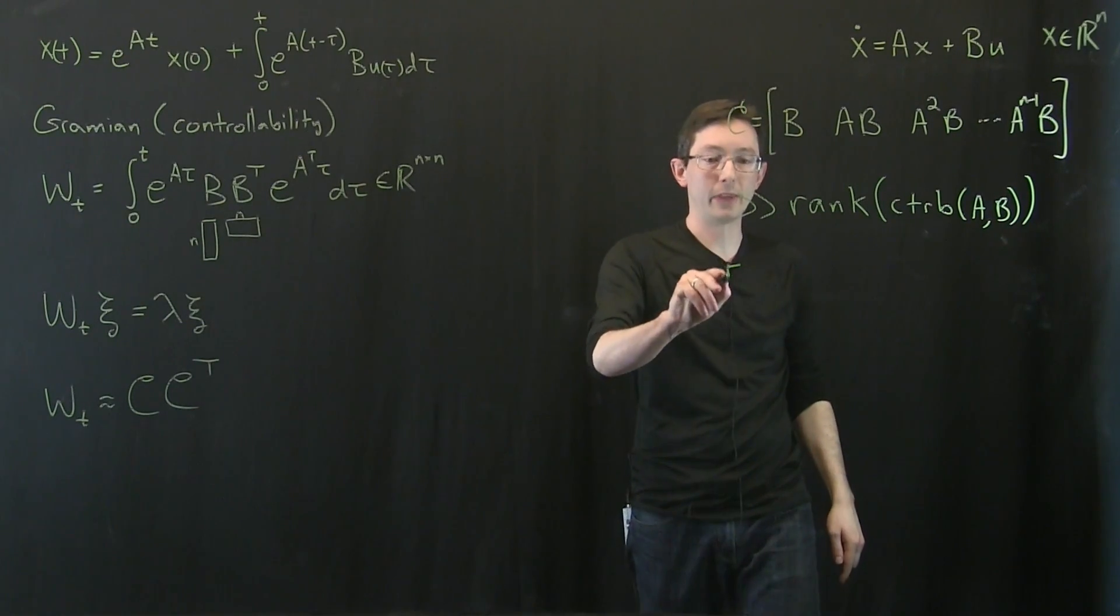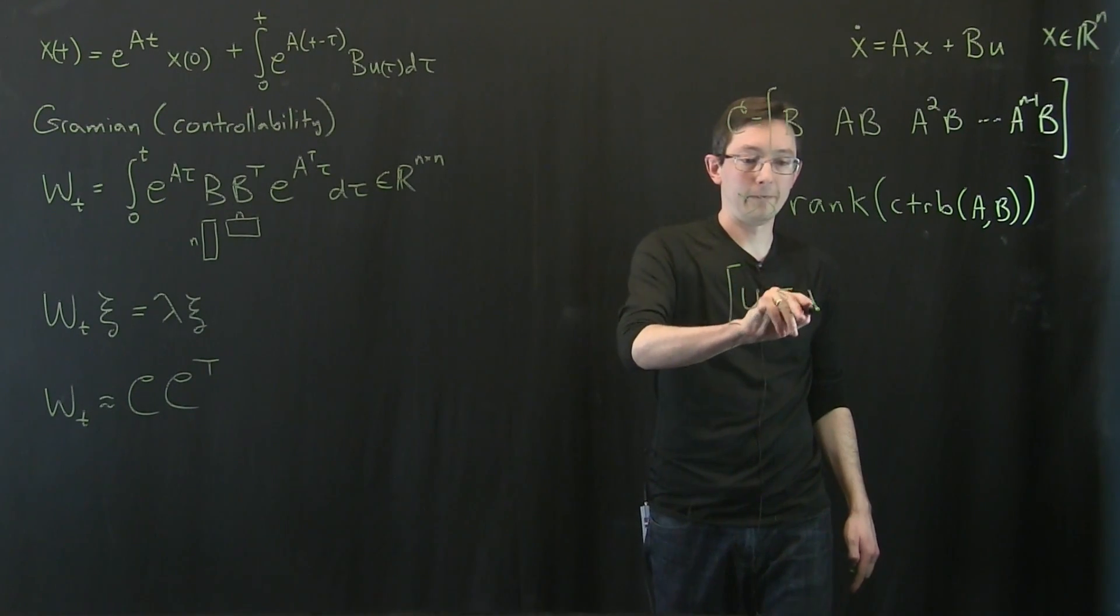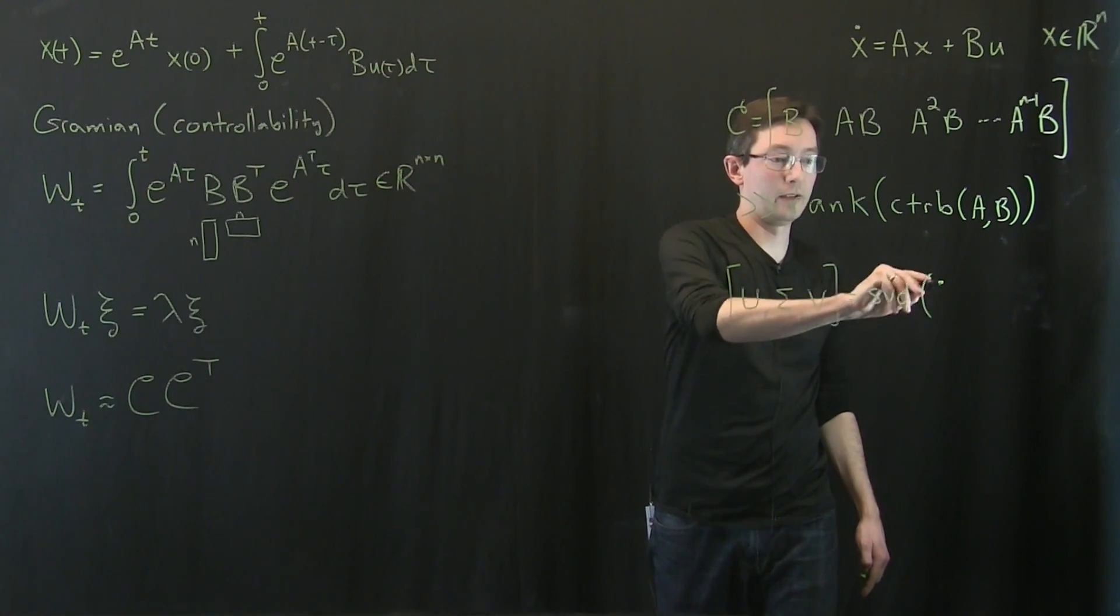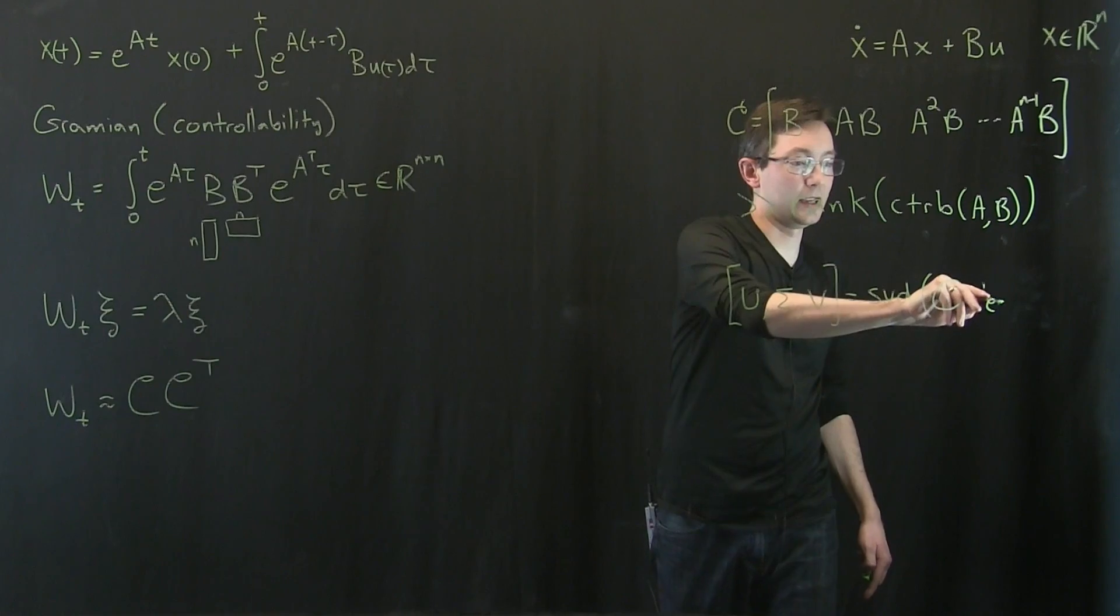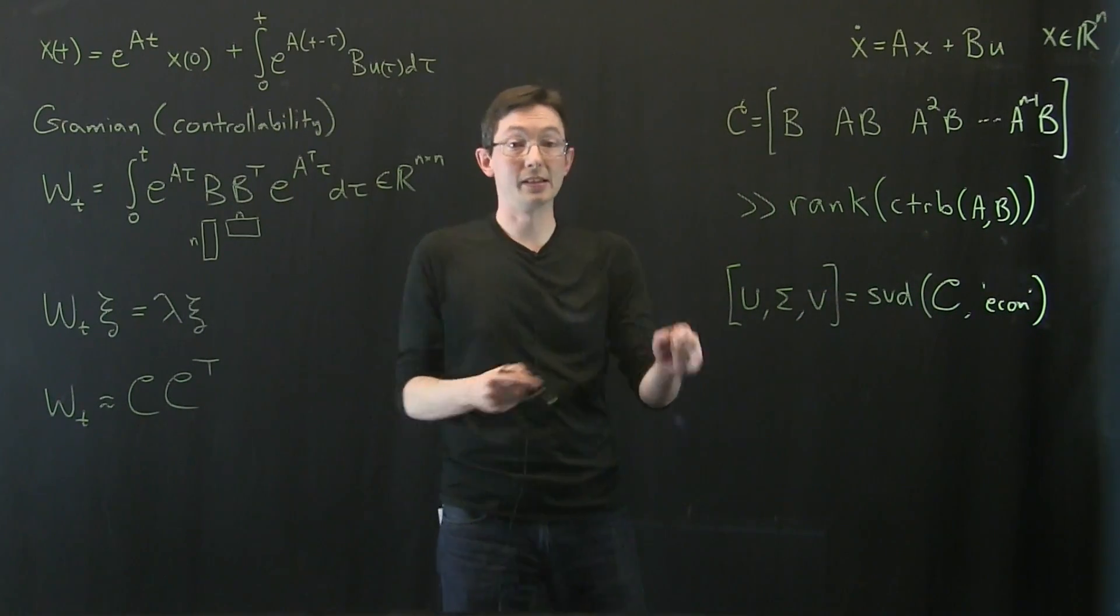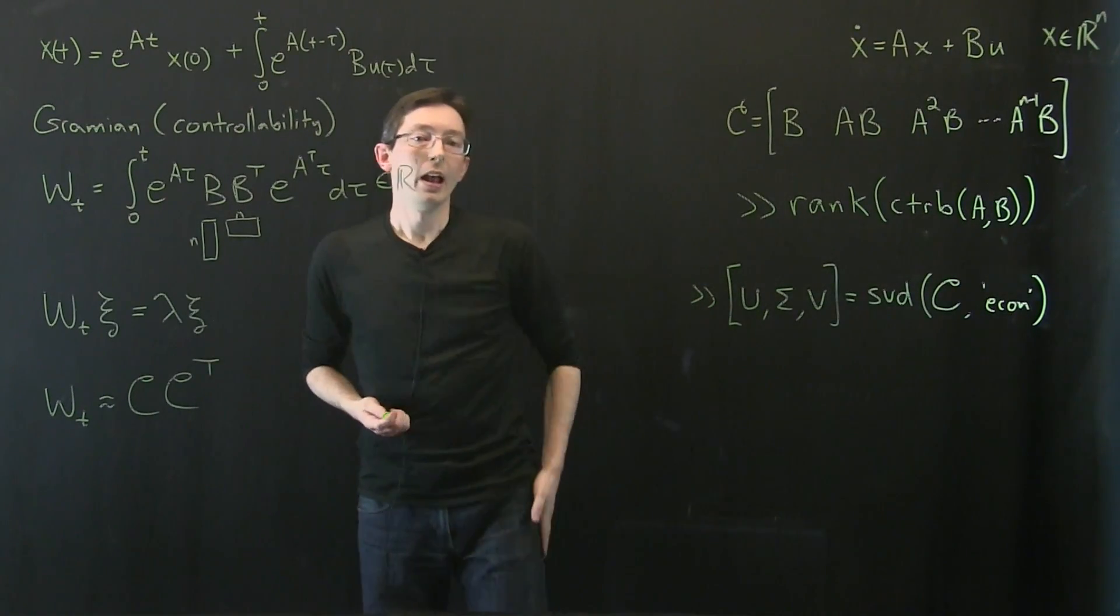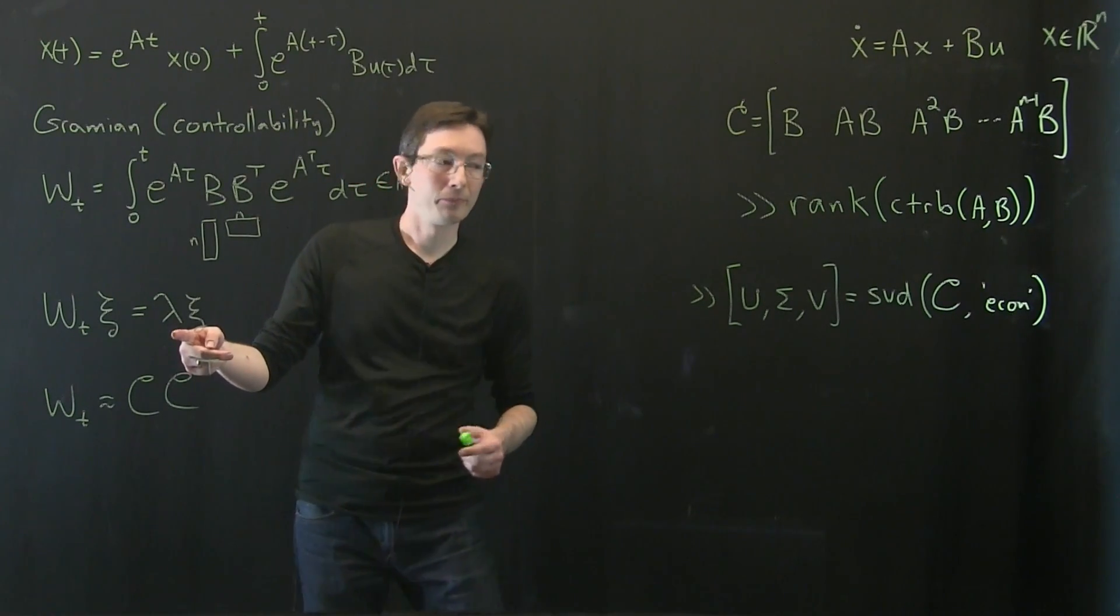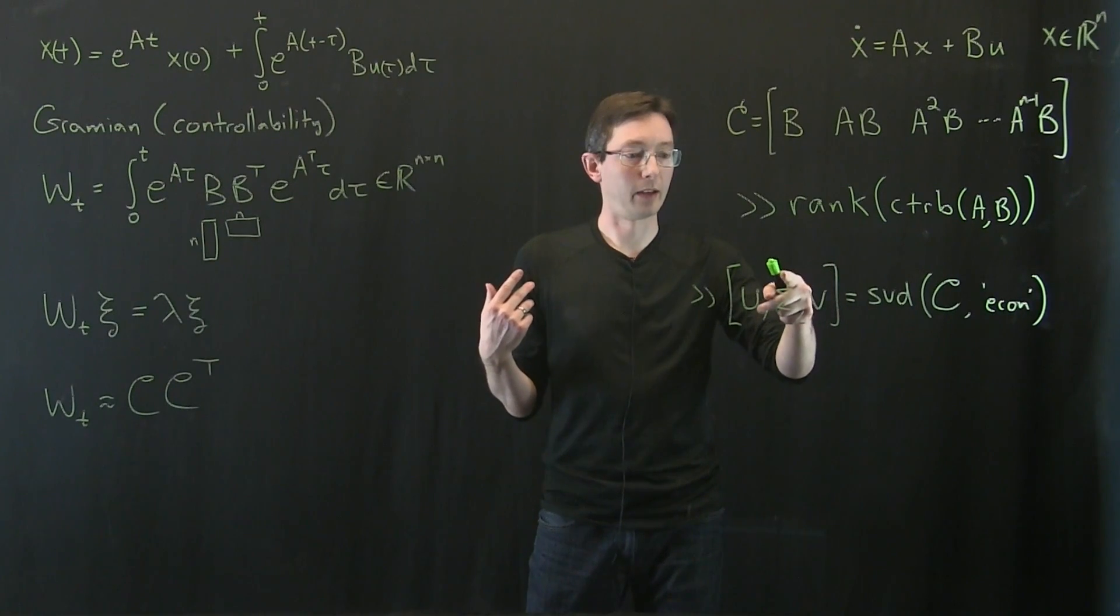But you'll notice that the eigenvalues and eigenvectors of this matrix are the singular vectors and singular values of C. So what I could do is I could look at U sigma V equals SVD of this controllability matrix, and in practice I'm going to say I want the economy SVD. So in MATLAB this is literally what I would type in. I would type in the SVD of this controllability matrix. And what I'm going to get, so now the biggest eigenvalues here are my singular values squared, I think.